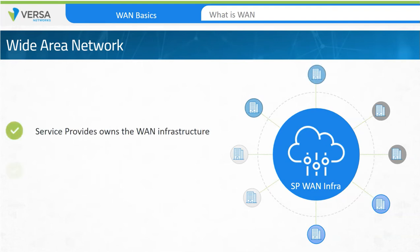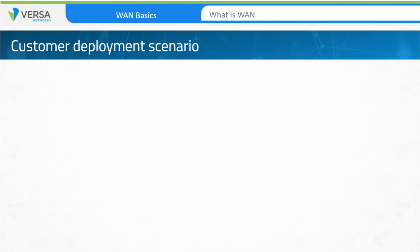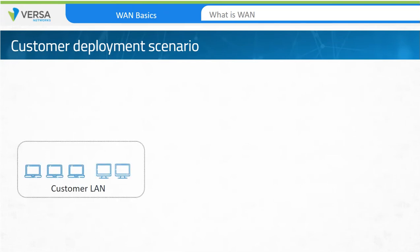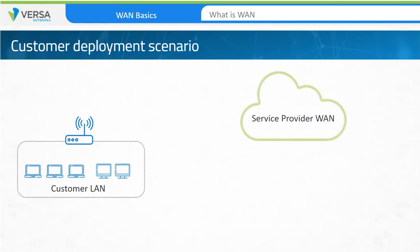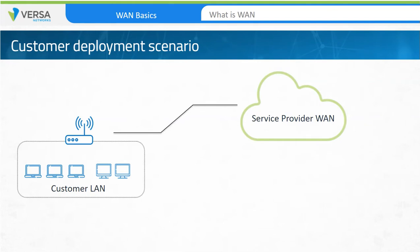Let's take a look at a customer deployment scenario. At a customer location, the WAN links are terminated on a customer premise equipment, or CPE, device. The link that connects to the service provider network is called the last mile, through the service provider's point of presence, or POP. A POP is the nearest node from where a service provider will extend connectivity to a customer.